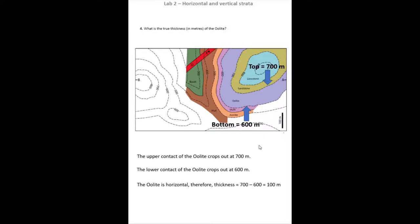Now if the oolite is horizontally bedded, which we can tell that it is from its outcrop pattern on the map, then we can work out that the thickness of the oolite is the height of that top contact, 700, take away the height of the bottom contact, 600, to give us a thickness of 100 meters.